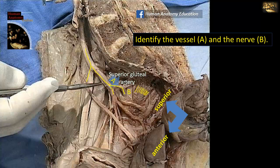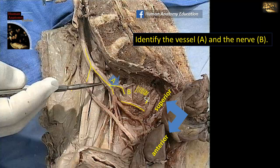The superior gluteal artery is a branch of the posterior division of the internal iliac artery — a big branch that passes above piriformis muscle. As you can see, the artery is located in between two nerves. The nerve B, which we are also asked to identify, is S1, and nerve A here is the lumbosacral trunk. The superior gluteal artery leaves the pelvis above piriformis, above S1. The inferior gluteal artery is also visible here; it leaves the pelvis below S2. So above S1 is the superior gluteal artery, and below S2 is the inferior gluteal artery.